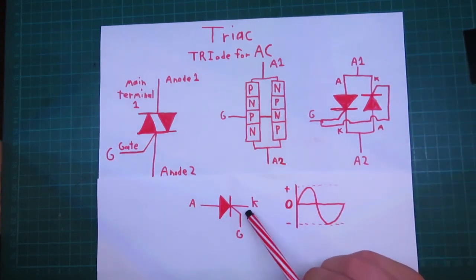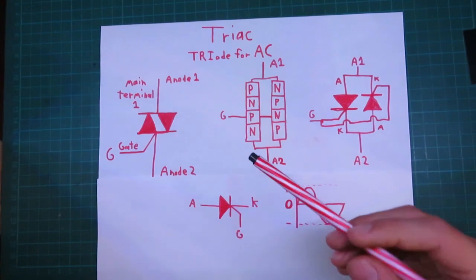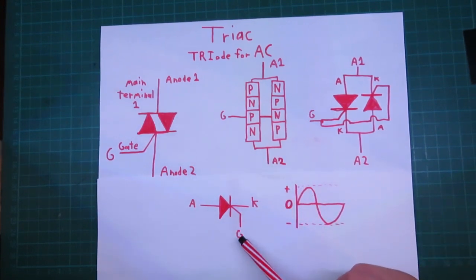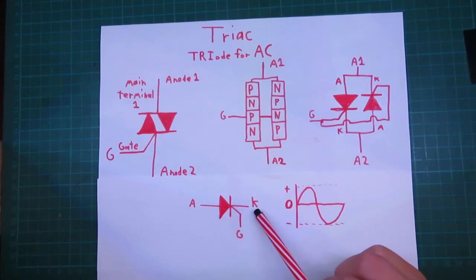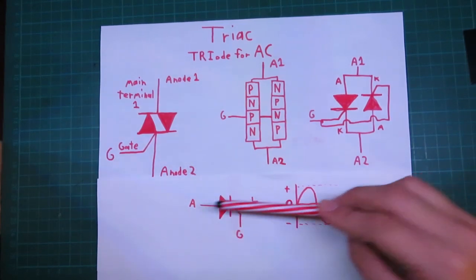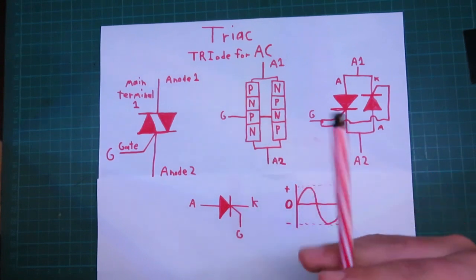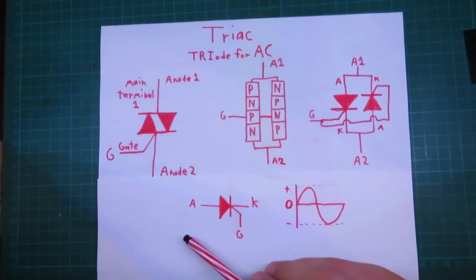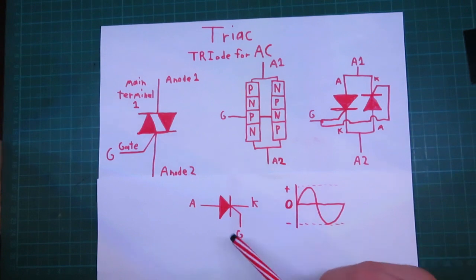The SCR is basically a diode with a control pin on it. So, you apply signal to the gate, and current can flow from the anode to the cathode. Now, it cannot flow from the cathode to the anode, it will be blocked, since it acts like a diode. And the only way to stop current from flowing from the anode to the cathode is to shut off power to the anode.